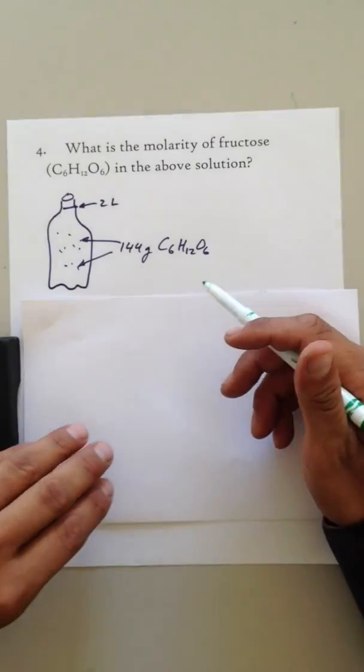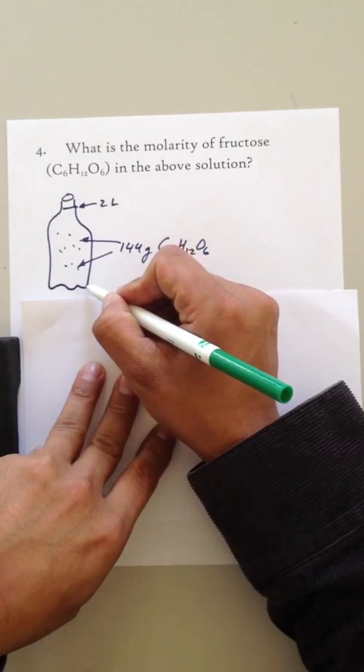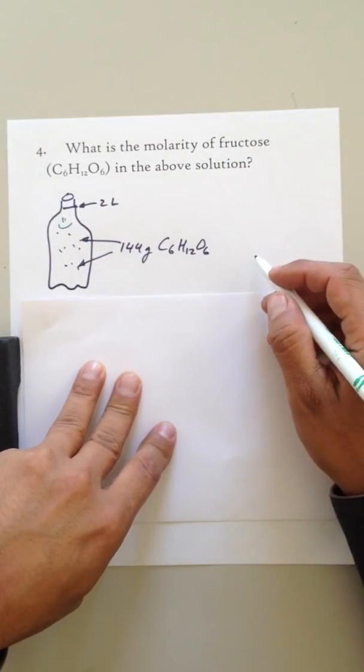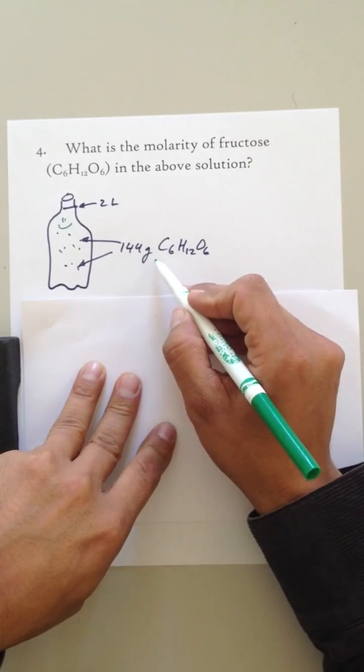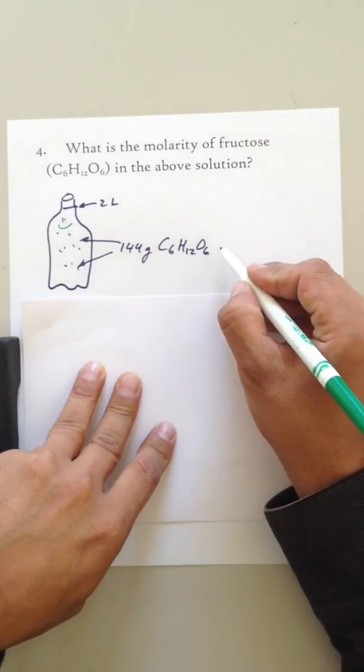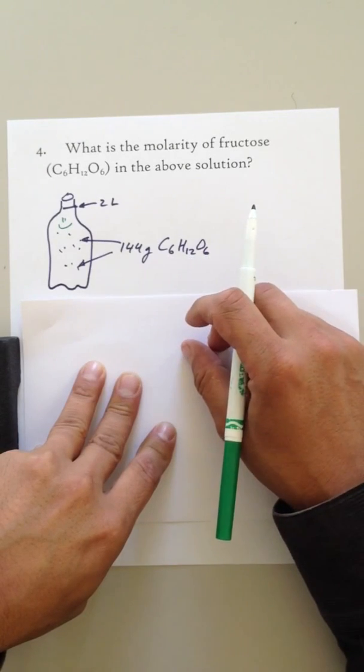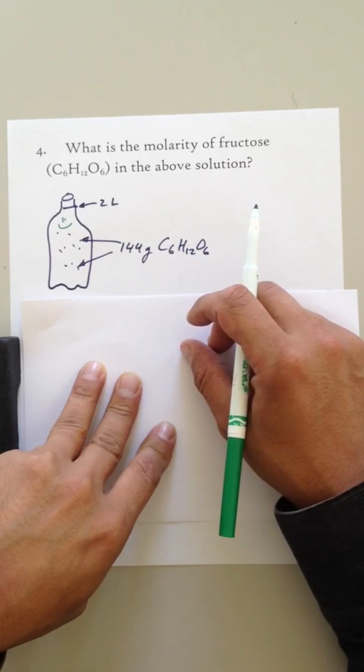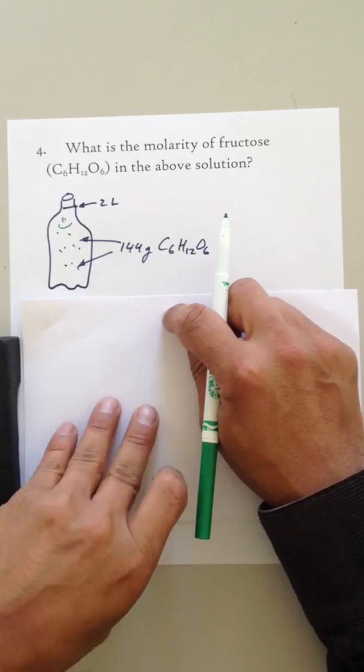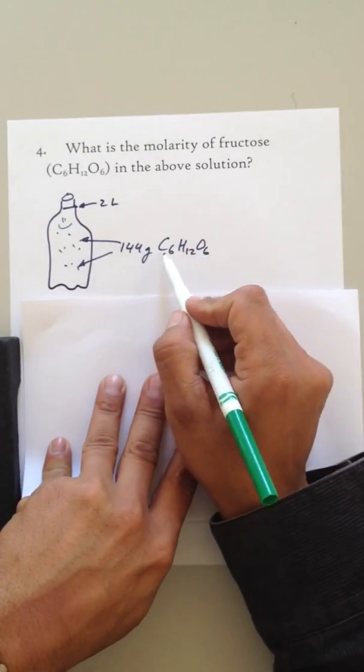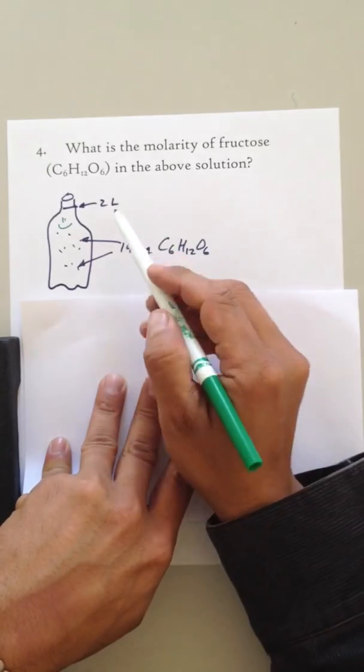Well, the previous problem, we determined, this is my lovely two liter bottle, that there are 144 grams of sugar, and it's pretty much fructose, C6H12O6, because mostly you got from corn, it's pretty cheap because it's subsidized, it's a nice cheap form of sugar. So 144 grams of fructose in two liters.